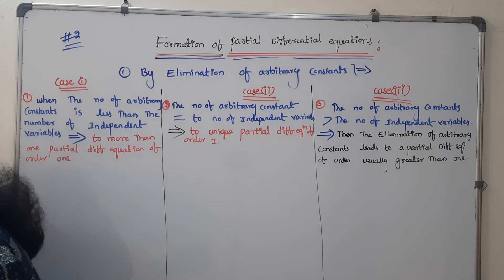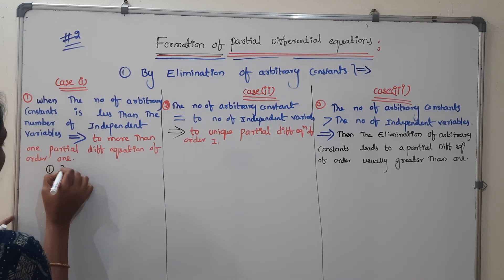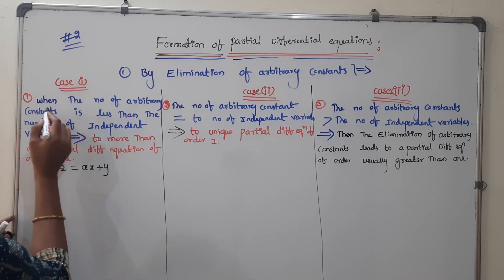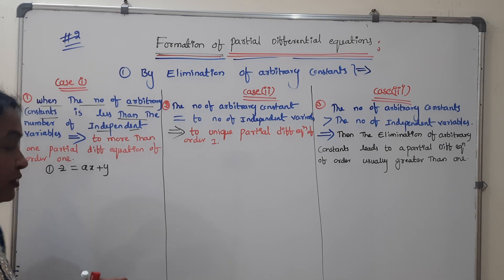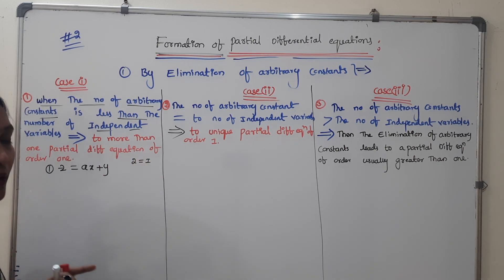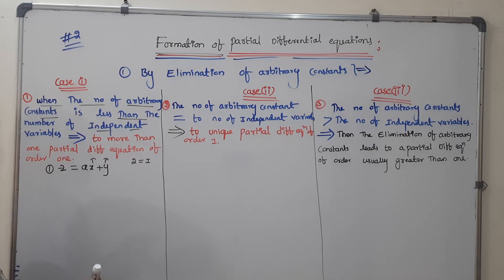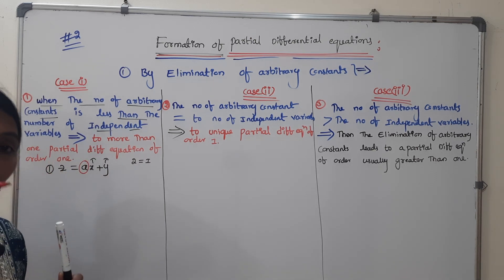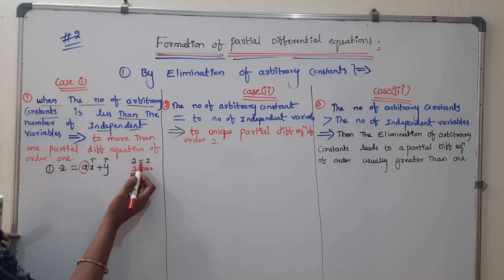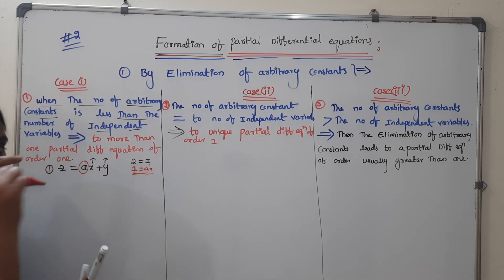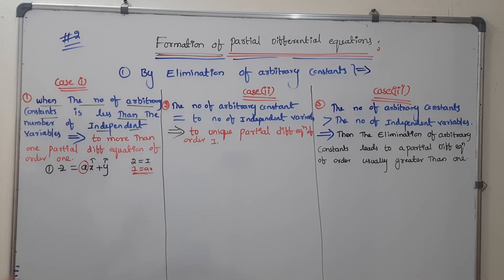I will consider one example. For example, z is equal to ax plus by. When the number of arbitrary constants is less than the number of independent variables, first we identify the independent variables — which are x and y, so there are 2 independent variables. The arbitrary constant is only 'a' — so there is only 1 arbitrary constant. Since independent variables are greater than arbitrary constants, there is more than one partial differential equation as a solution.